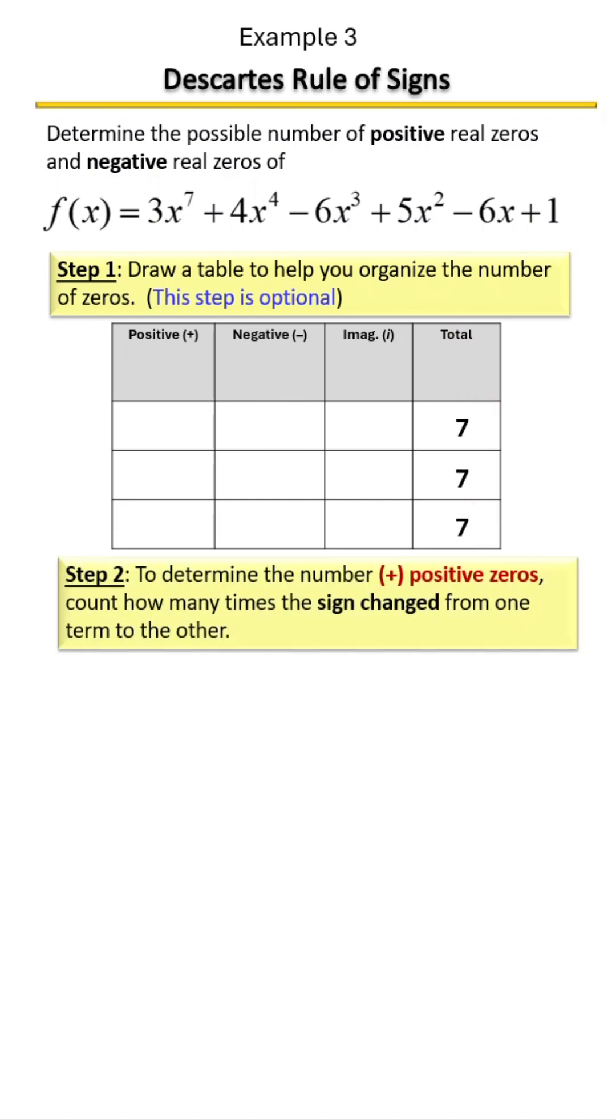Next we're going to start by identifying our positive zeros. To do that, all we have to do is simply count how many times the sign changed from one term to another. So let's look from first to second. Did it change? No. How about from second to third? Yes.